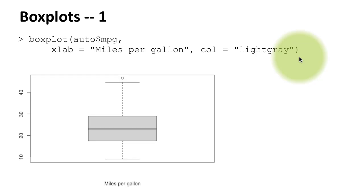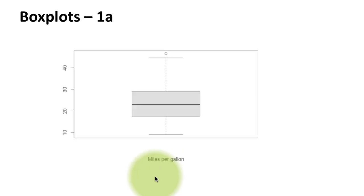The result looks like this. Now the boxplot, like the histogram, is a way of visualizing the distribution of values in a numeric variable. There are many elements of a boxplot that you should understand very well in order to get the full meaning of a boxplot. So let's take a look at each of these components.